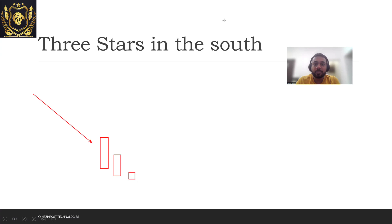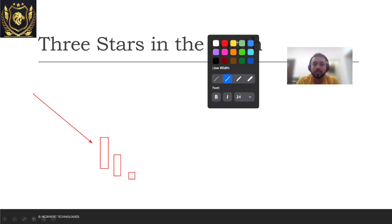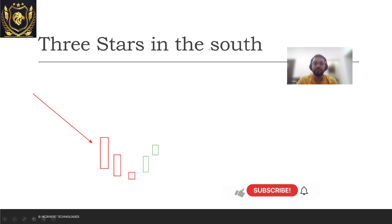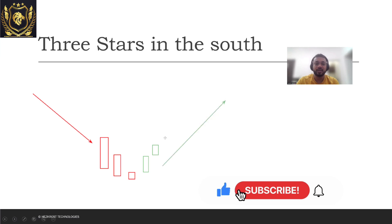Now what can happen is you can expect that the next day you see a green candle getting formed, and even the next day you see another green candle getting formed. So you can expect a trend reversal, and this is what Three Stars in the South actually says.